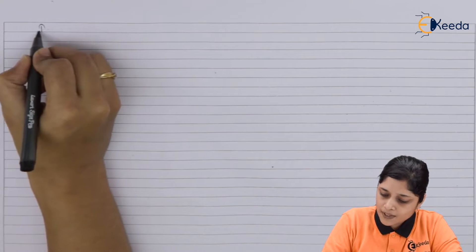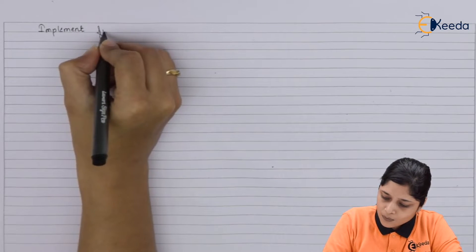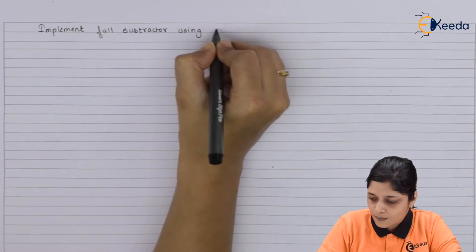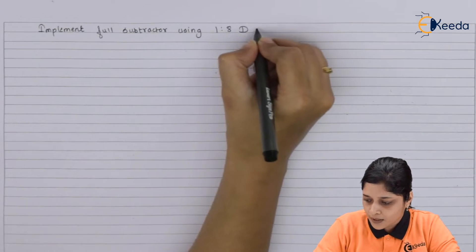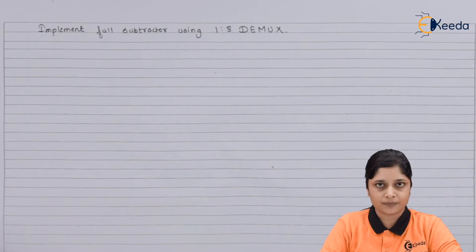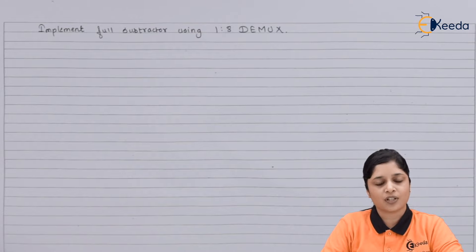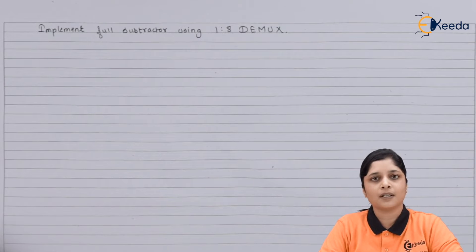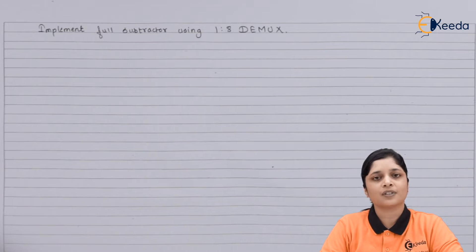So implement full subtractor using 1-to-8 DMUX. First of all, you should know the full subtractor. Full subtractor is used for subtraction of three binary bits. According to the rules of binary subtraction, you have to get the outputs for difference and borrow. So from the truth table, you are going to get the outputs for difference and borrow.